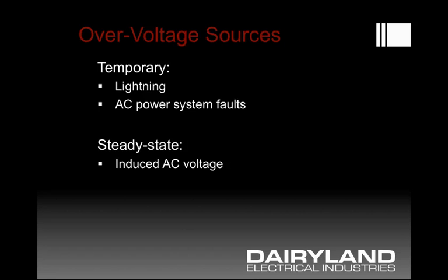There are a couple different sources of overvoltage. There are temporary conditions that exist only during an event such as a lightning event, or an AC power system fault from an AC distribution or transmission system that is there only for the duration of the fault until a clearing device operates, such as a power breaker. Or it could be that there are just steady state concerns, and those are induced AC voltage from overhead power lines. Where a pipeline runs in a common corridor with a power line, an induced voltage will appear on that pipe at various levels, and that voltage needs to be reduced for worker safety mainly, and that can be done on a steady state basis.